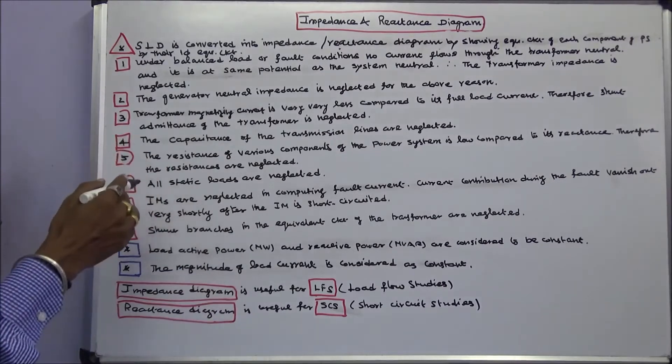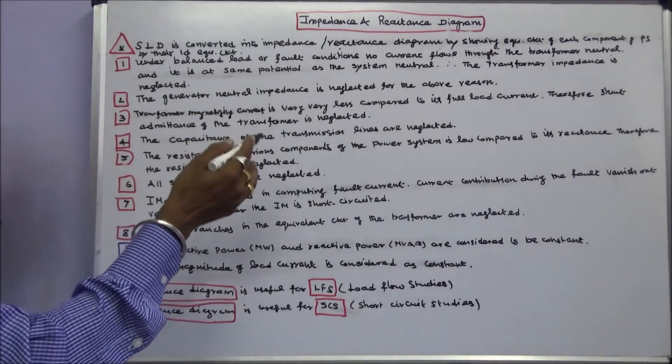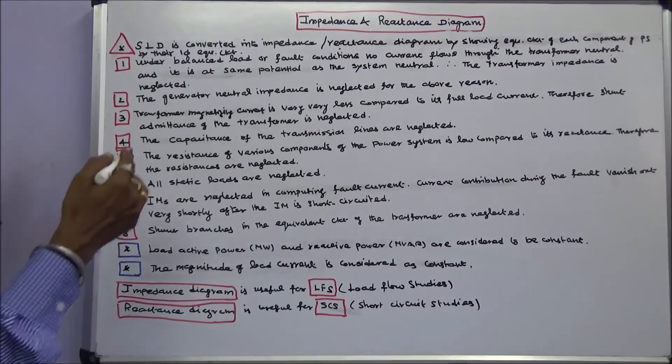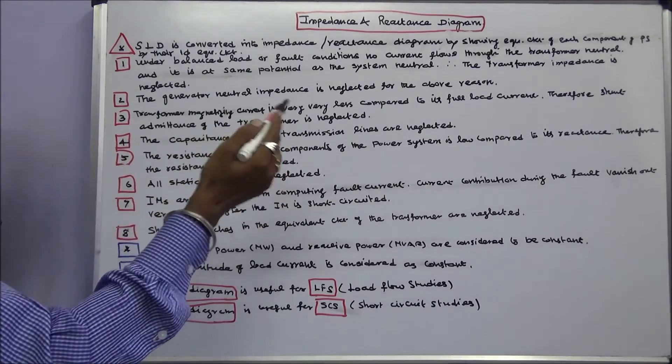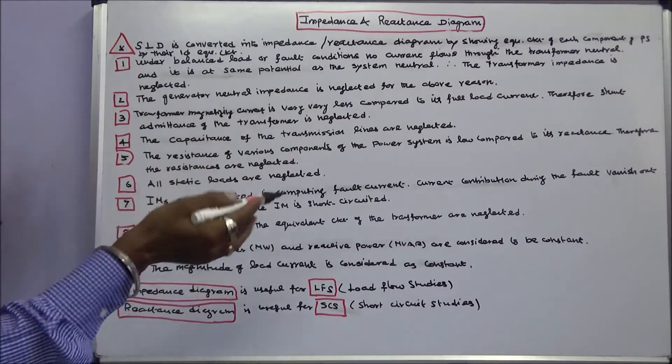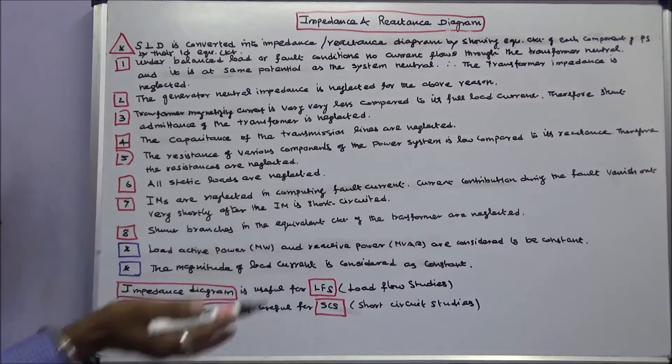Fourth, the capacitance of the transmission lines are neglected. Fifth, the resistance of various components of the power system is very low compared to its reactance. Therefore, the resistances are neglected.